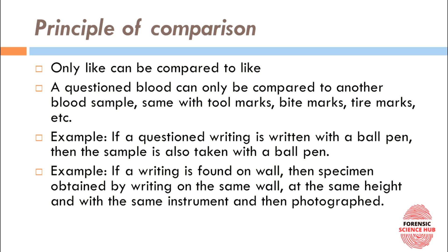Next is the Principle of Comparison. This means that like can only be compared to like. For example, if there is a questioned blood sample, then that blood sample can only be compared with another blood sample — it cannot be compared with a saliva sample, urine sample, or semen sample. Similarly, tool marks can only be compared with tool marks, and bite marks can only be compared with bite marks.